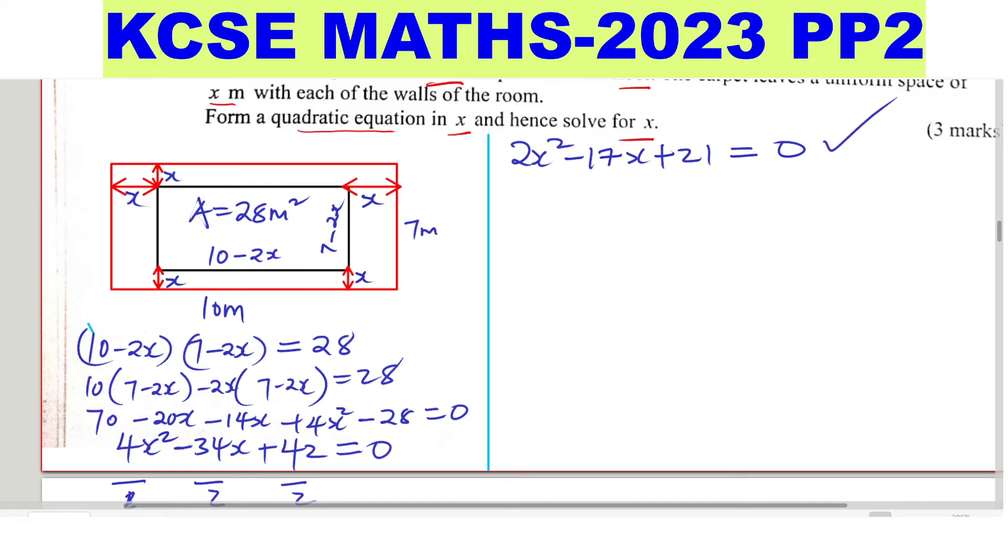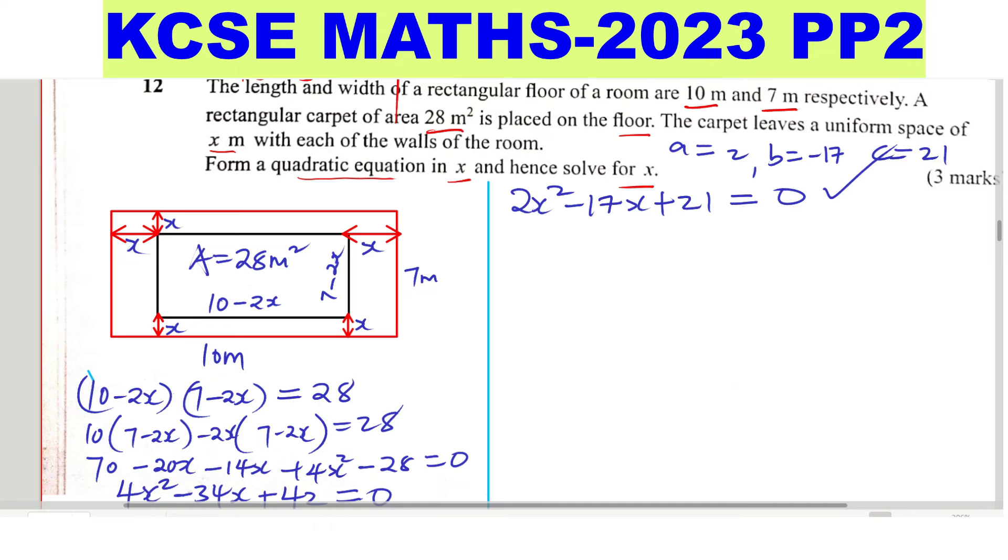To solve this, I'll use the quadratic formula, where the value of a will be 2, b will be negative 17, and c will be 21. You just substitute it in the quadratic formula. You know the quadratic formula.